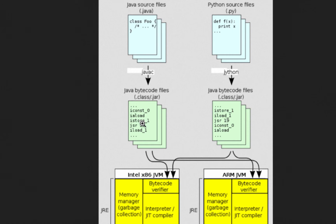We want this bytecode to be able to run on any operating system. For example, if there's a System.out.println in the code, the bytecode contains the definition for that — it should put this in memory and then print it from memory to the output. The bytecode contains a Java representation of printing something to the output, but how you print to the output is different in different operating systems. How you print to the output in Windows might be different from how you do it in Mac.